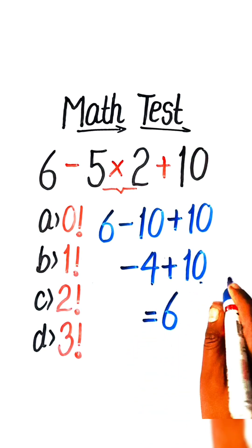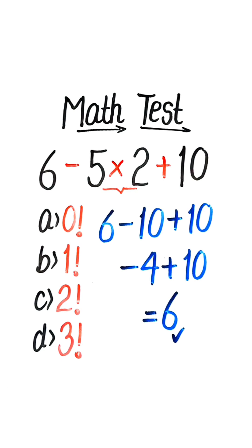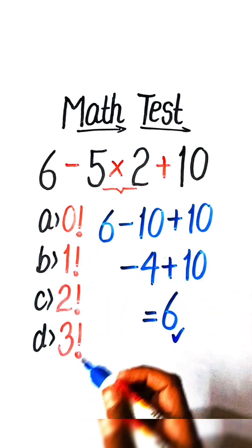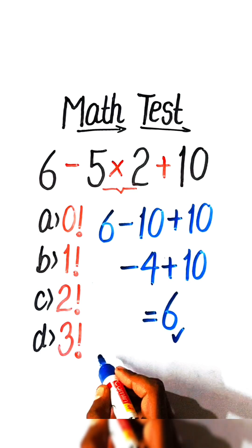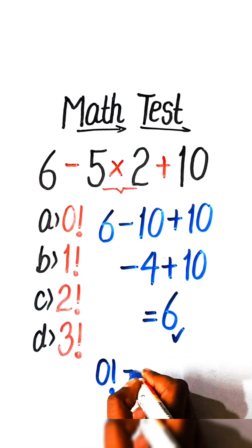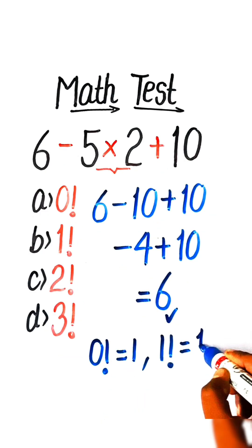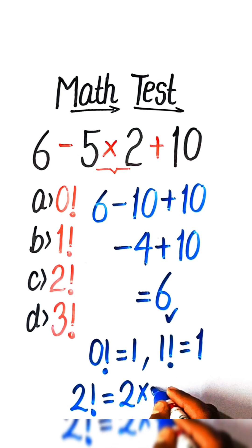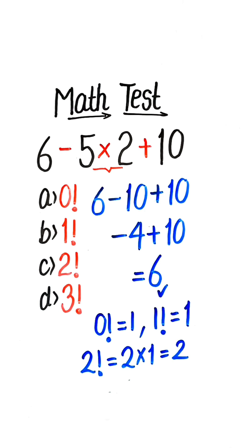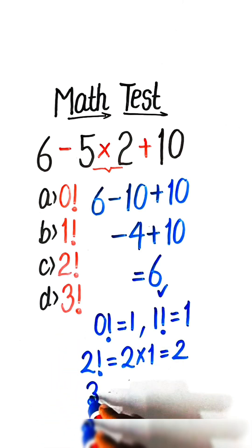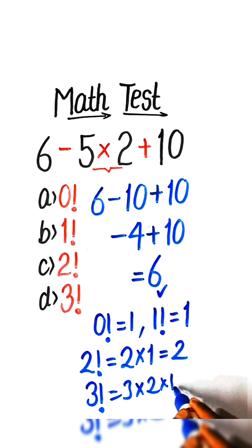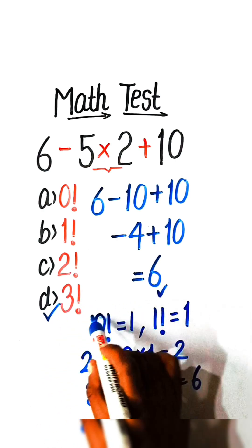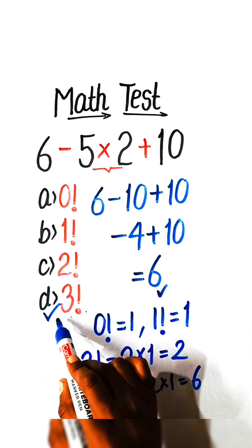So 6 will be our correct answer. But in options we have all options in factorial, so the value of 0 factorial is 1, value of 1 factorial is 1, value of 2 factorial is 2 multiply by 1 is 2, and value of 3 factorial is 3 multiply by 2 multiply by 1 equals 6. So Option D is the correct answer.